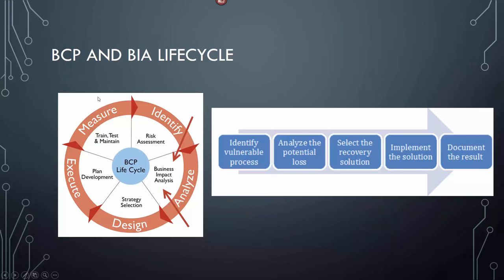BCP and BIA life cycle: business continuity plan and business impact analysis. The BCP has the BIA in it — not the other way around. The business continuity life cycle is: identify, analyze, design, execute, and measure. On the analyze stage you'll have the business impact analysis. BIA steps: identify the vulnerabilities, the loss, the recovery resolution, implement the solutions, and document the results. Once you identify all vulnerabilities in the business impact, you'll be able to figure out your risk.